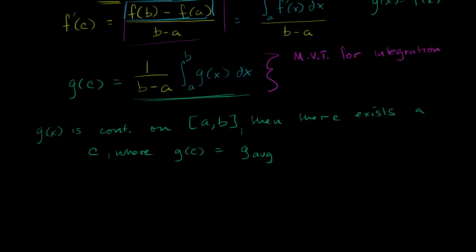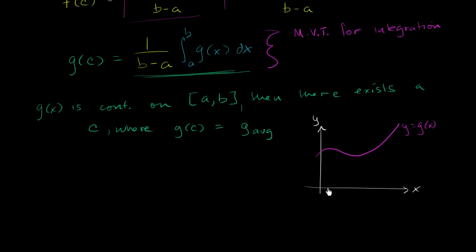If I were to draw g of x — that's the x-axis, that's my y-axis, and this is the graph of y equals g of x, which is the same as f prime of x — and we're talking about the interval from a to b, we can calculate the average value. Maybe the average value is right there, so that is g-average. The Mean Value Theorem for Integrals tells us there's some c where our function must take on that average value, and that c is inside the interval.